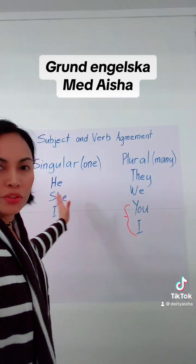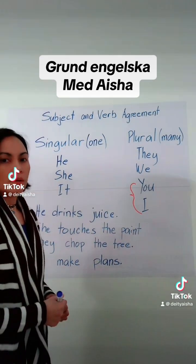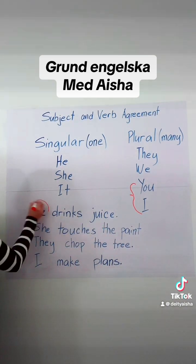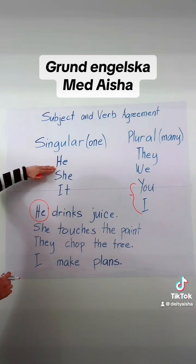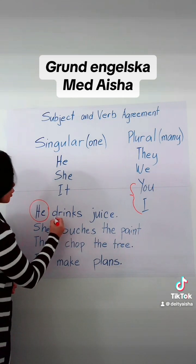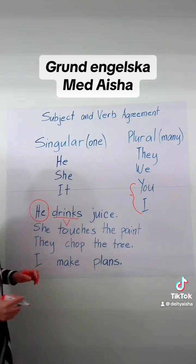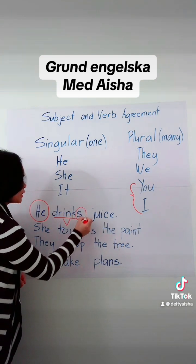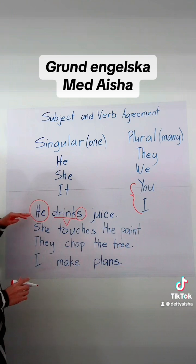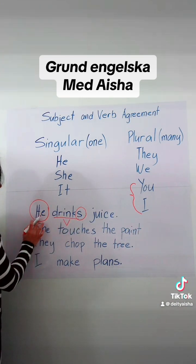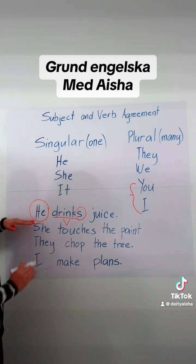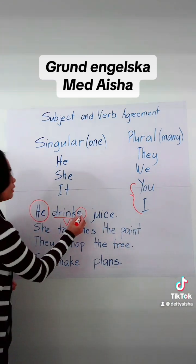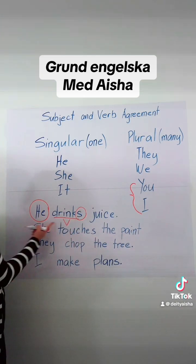So now we will have an example first on the singular form. We have: He drinks juice. The subject here is he, which is singular. So your verb is drink, but we have to add s — drink becomes drinks — because the verb must agree with your singular subject. So if you have a singular subject, you have to add s. He drinks juice.